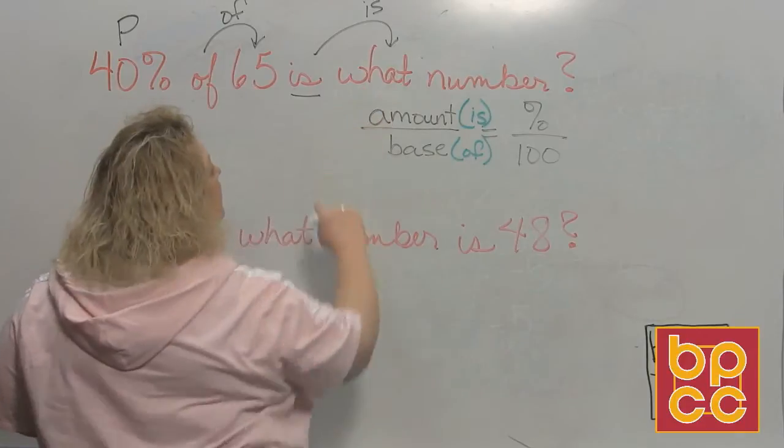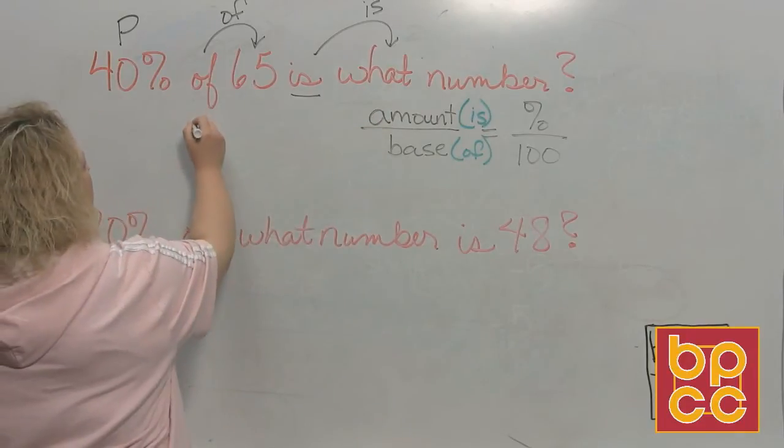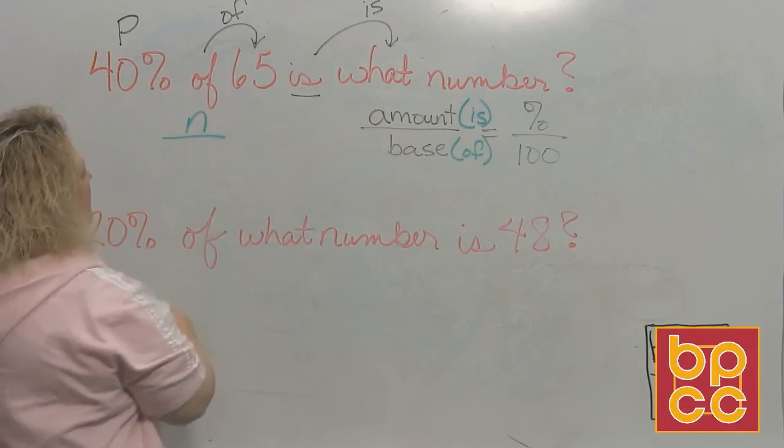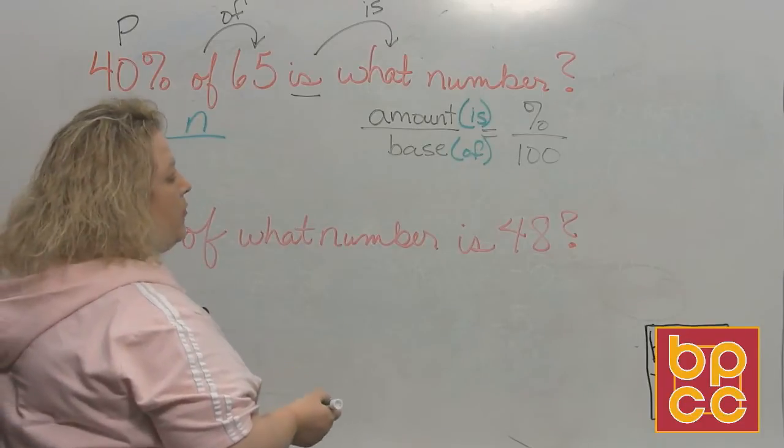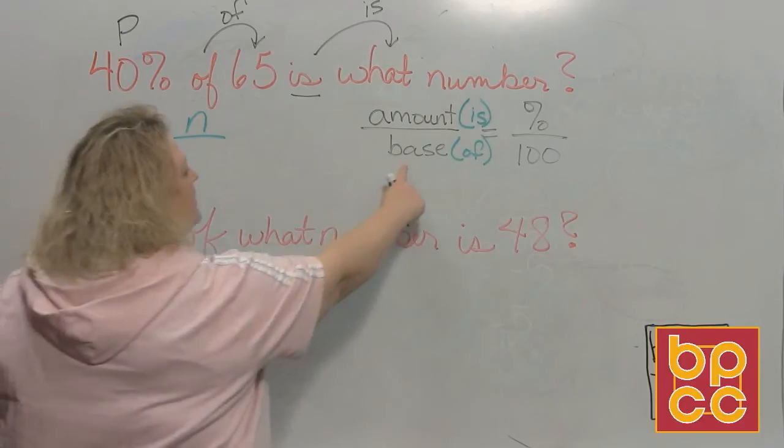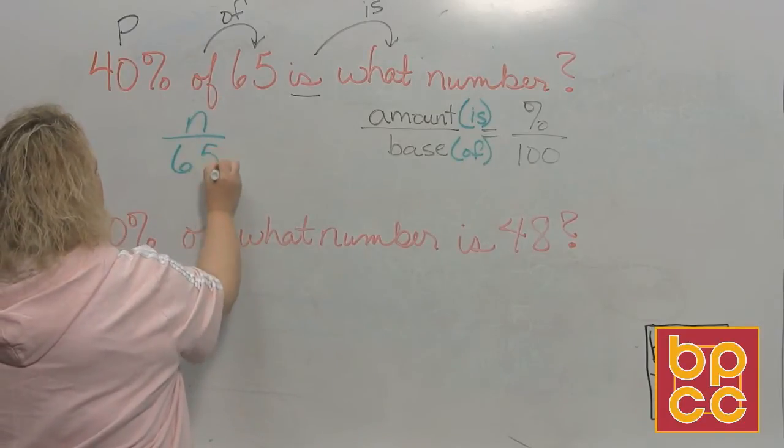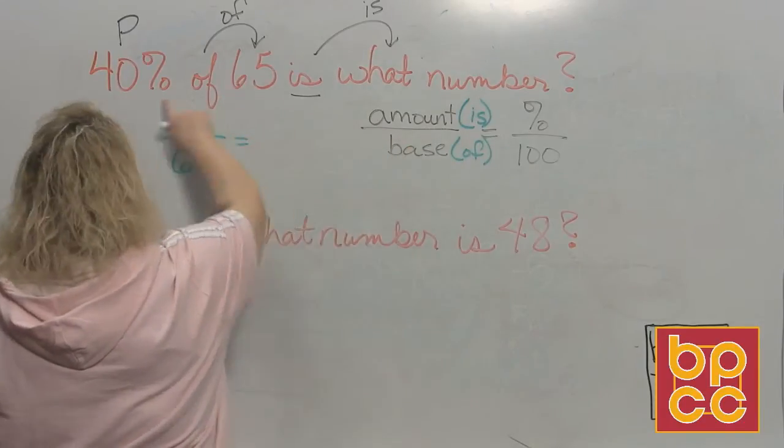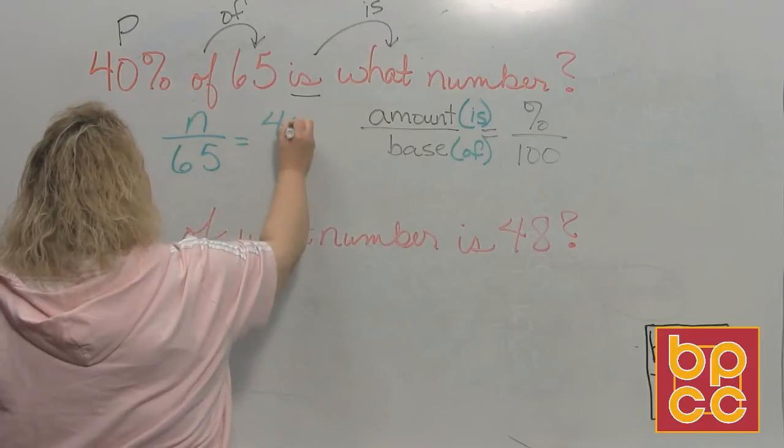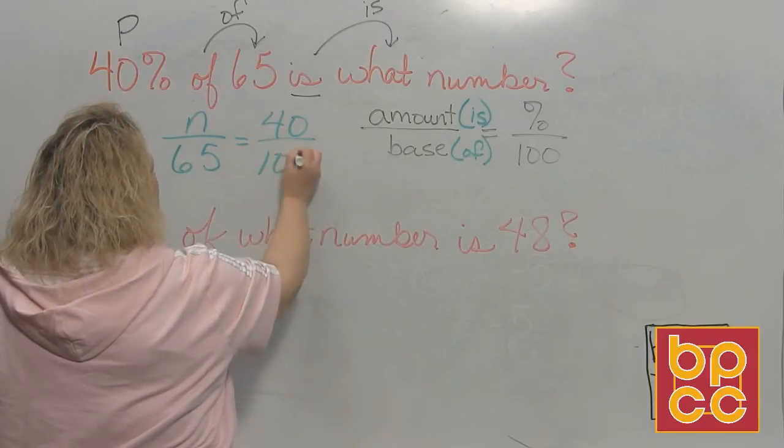'Is', do I know what 'is' is? No I don't. So that's where I'm going to put my variable because I don't know what it is. My base is the number attached to 'of'. Do I know what that is? Yes I do, it's 65. My percent, I know what that is, it's 40. And the percent always goes over 100.